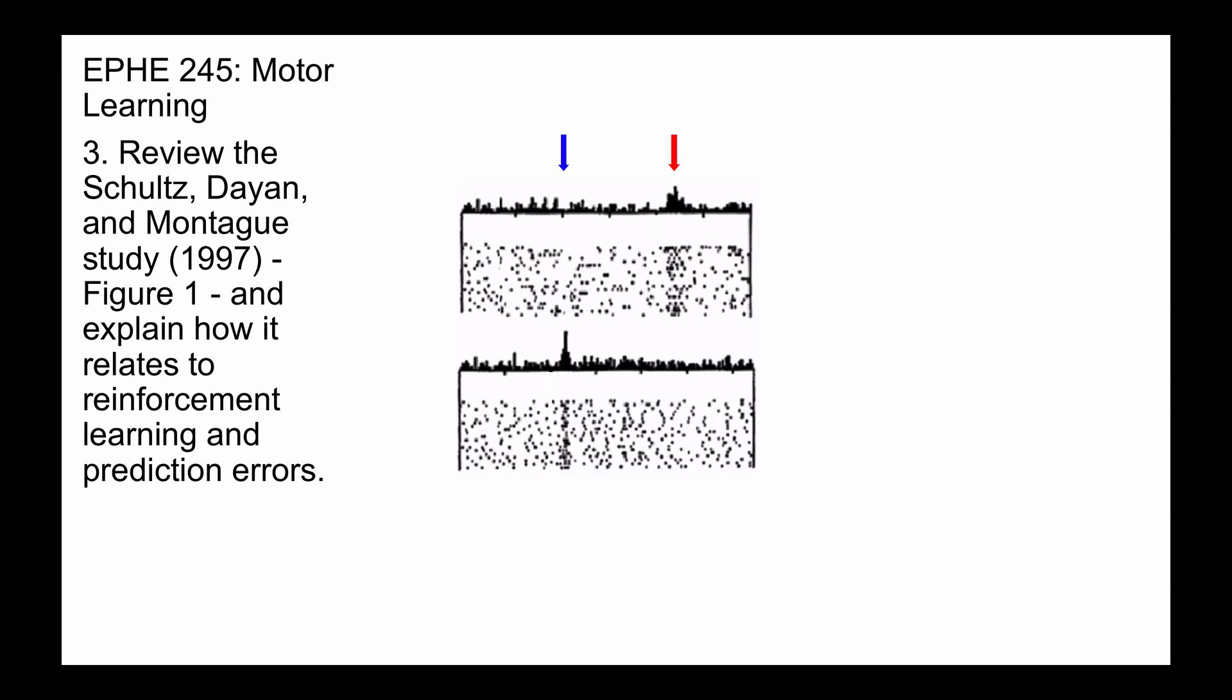After the monkeys were conditioned, what they found was that the increase in firing rate at the time of the reward was gone. But instead, there was an increase in firing rate at the time of the cue that predicted the reward.